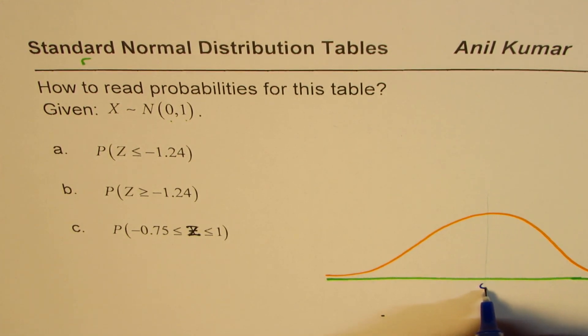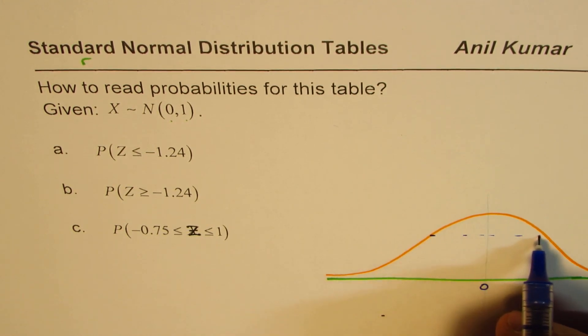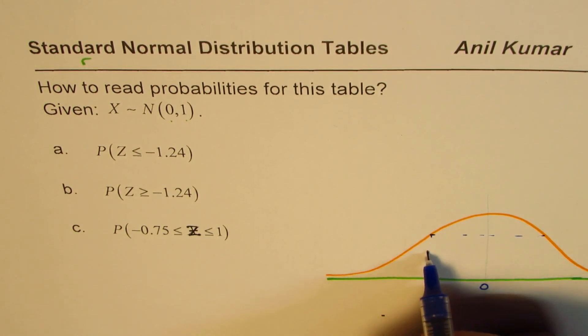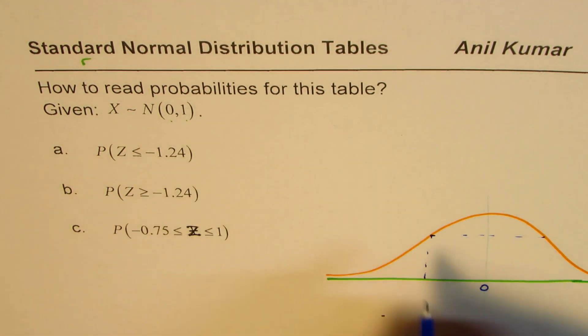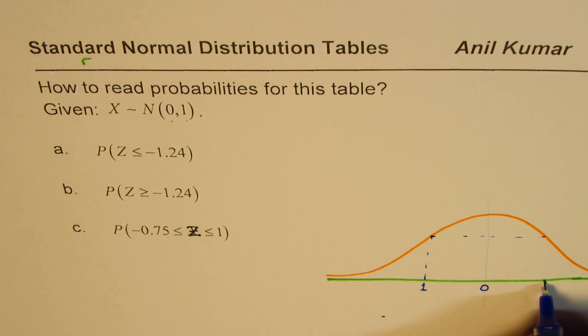So this happens to be at 0. Mean is at 0. And this point where the concavity changes, that will be, in this case, 1 for us. So this is 1 for us, the standard deviation.